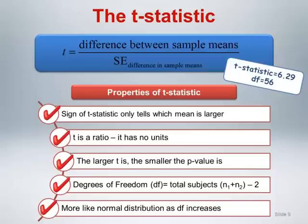The t-statistic is generated from what's called the t-distribution. The t-distribution is similar in shape to the Gaussian distribution, and as the degrees of freedom increase, the t-distribution becomes closer and closer to a Gaussian distribution. More on this later.